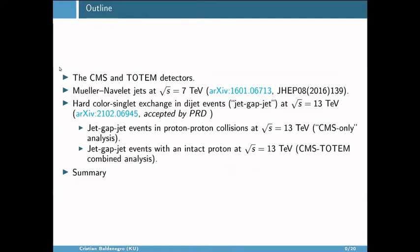Most of the talk will be related to the CMS experiment only, but there will be one aspect of the Jet-Gap-Jet study that is a joint study between CMS and TOTEM experiments. Here is the outline: first I'll give an overview of the CMS and TOTEM detectors, then discuss the Mueller-Navlet jets process at 7 TeV, then the Jet-Gap-Jet or hard color-singlet exchange process in dijet events at 13 TeV — submitted for publication earlier this year and recently accepted by PRD — and then I'll finish with a summary.